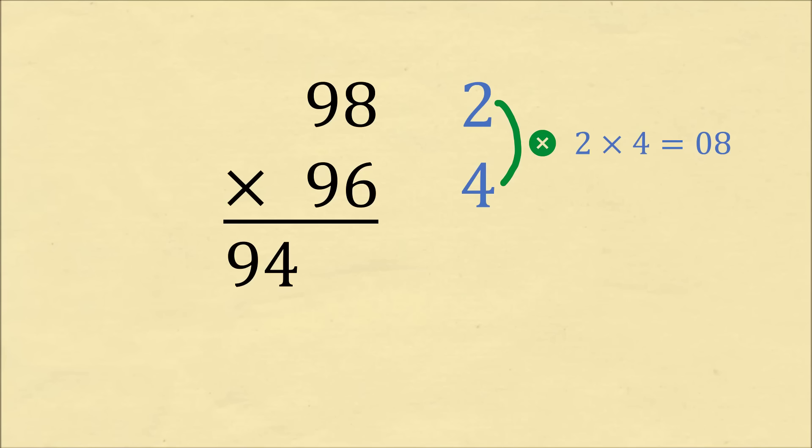Let me do another example. Let's do 98 times 96. So for 98, we need to have 2. And for 96, we need to have 4. Now let's cross-subtract. 98 minus 4 is equal to 94. We then have 2 times 4, which would be equal to 8. But we want to make sure that this product takes up two digits. So we will write 2 times 4 is equal to 08. So we put 08, and we have that 98 times 96 is equal to 9408.